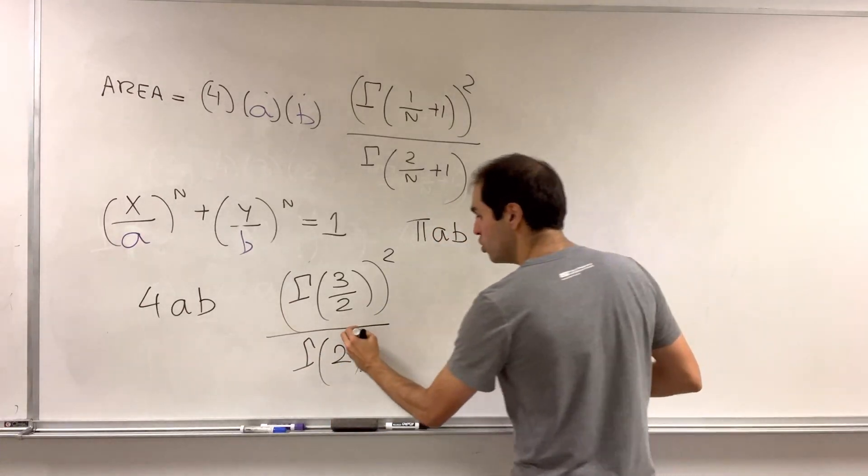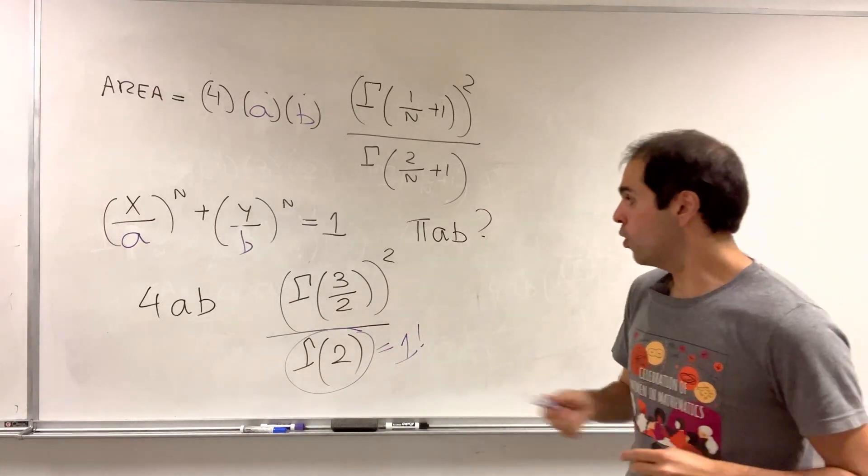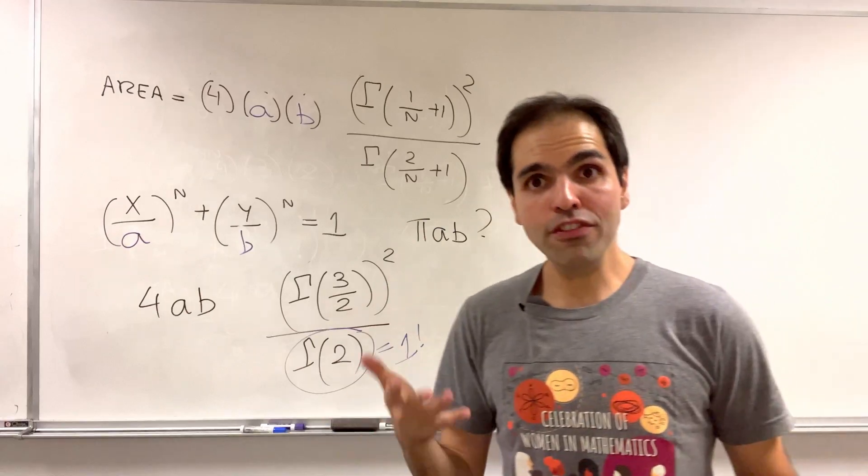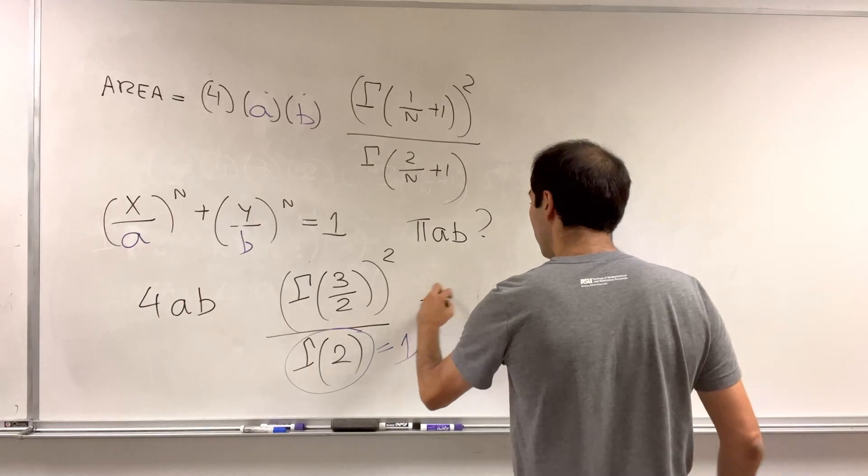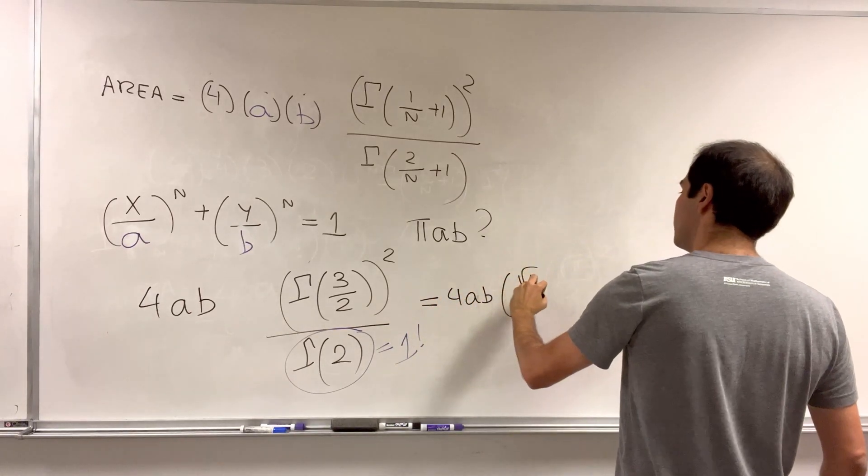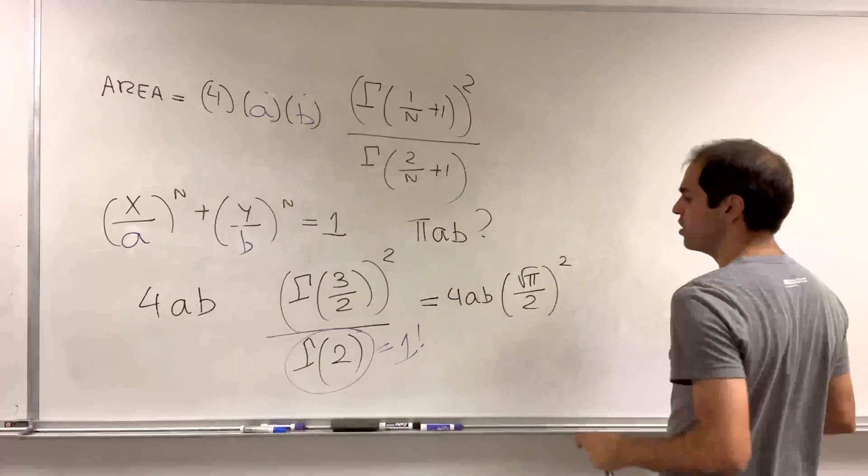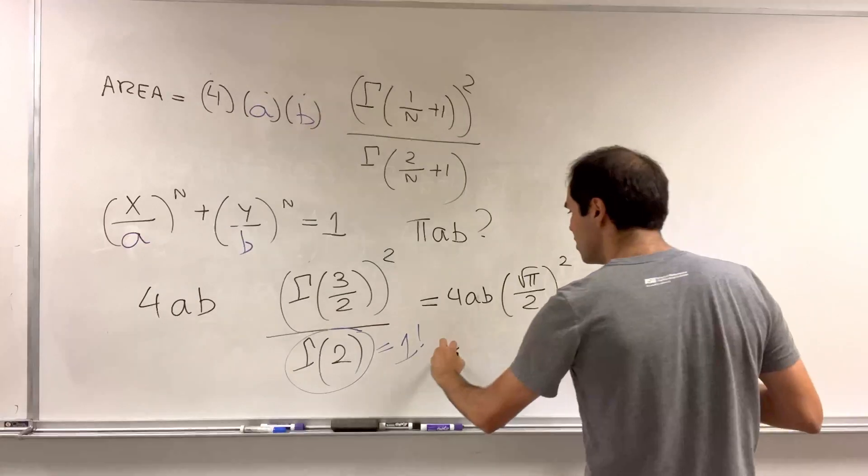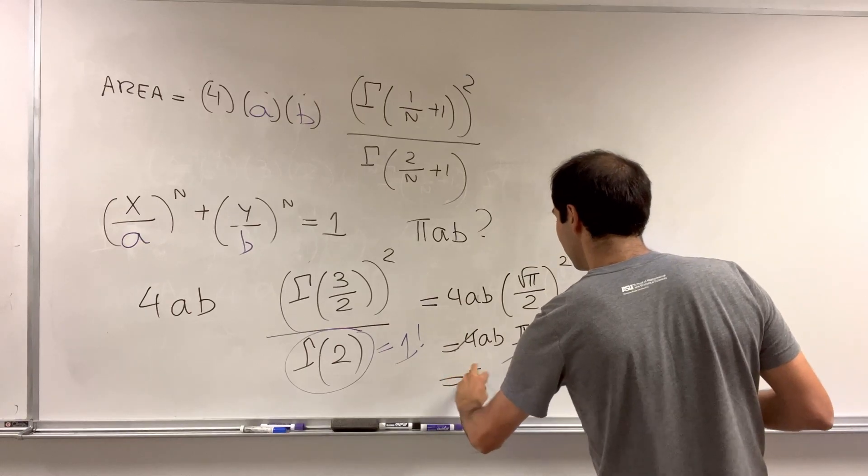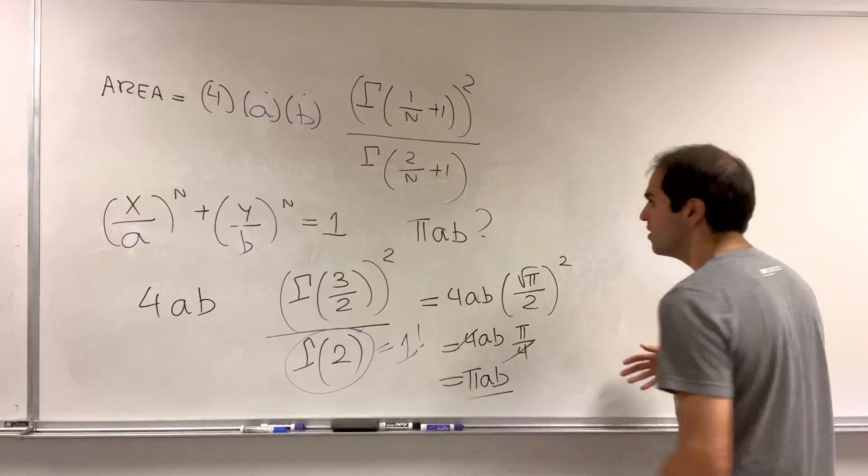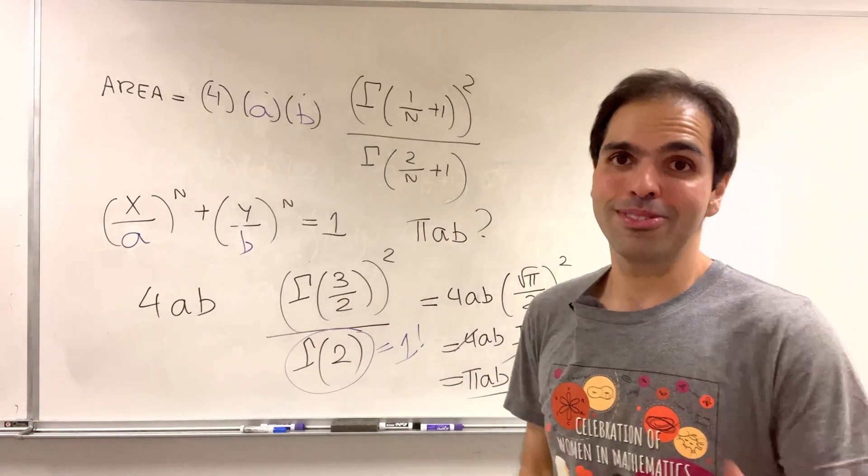But gamma 2, that is 1 factorial, which is 1, so we can ignore it. Gamma of 3 halves—I have done that in a separate video on half derivatives—the result was that gamma 3 halves is square root of π over 2 squared. And then this becomes π over 4. So indeed, we get 4ab times π over 4. And indeed, in the end, we get π ab. So it does agree with the area of an ellipse. How cool is that?